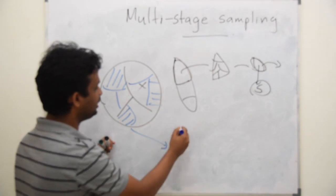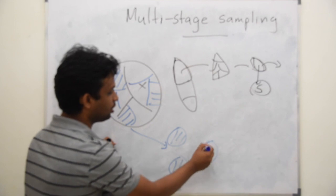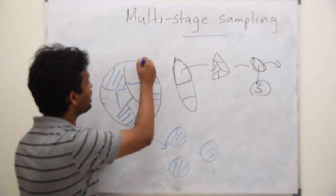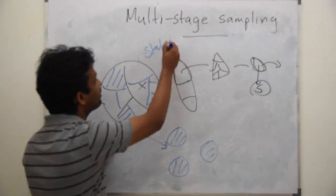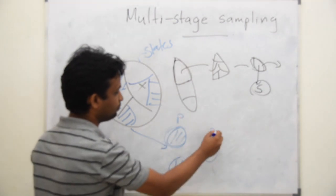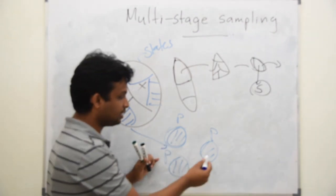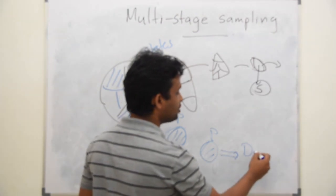Assume that these are states and these are provinces. And this may have very small parts and from provinces you can go for divisions.